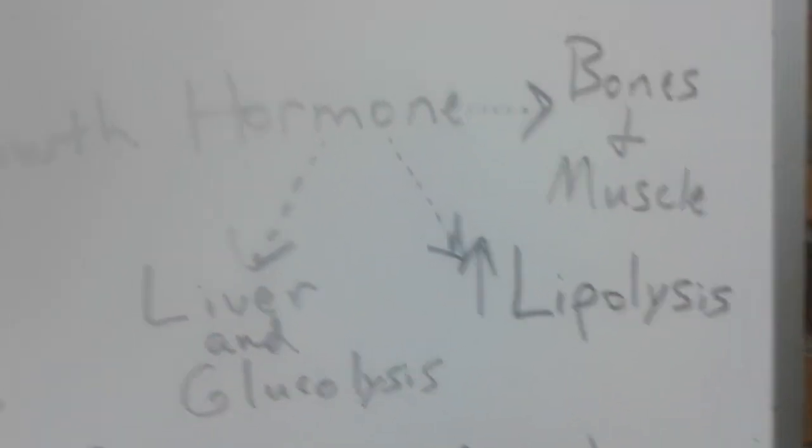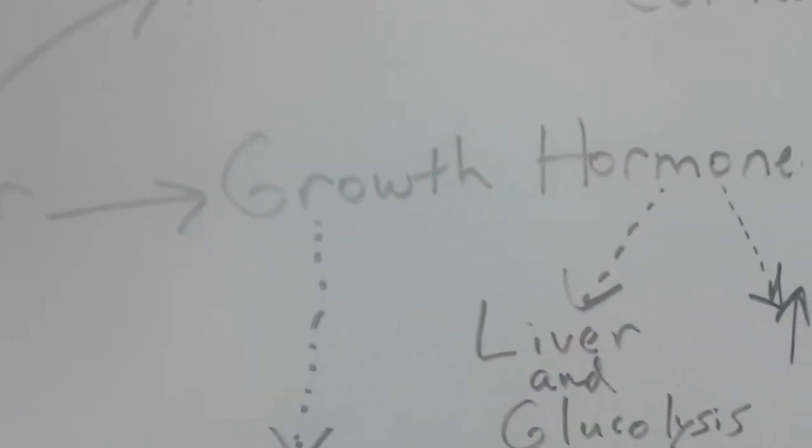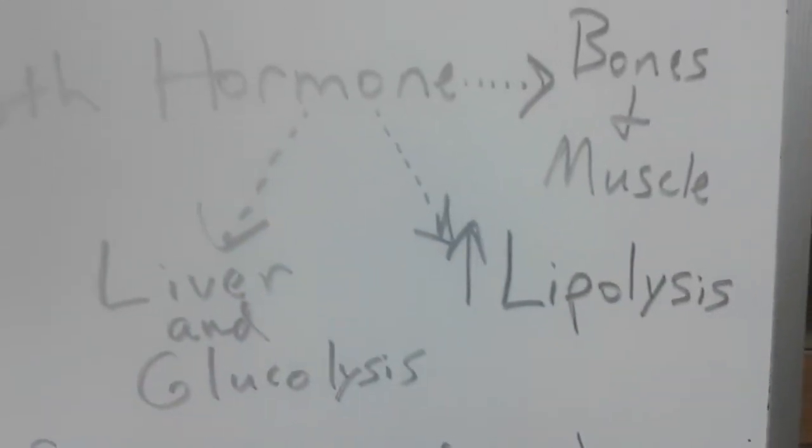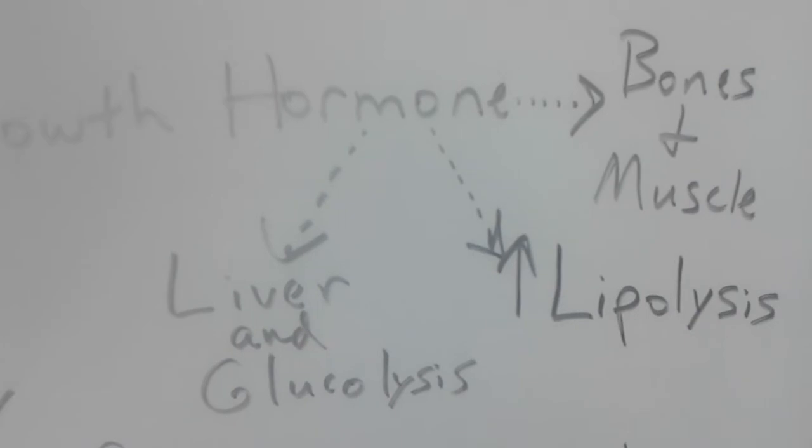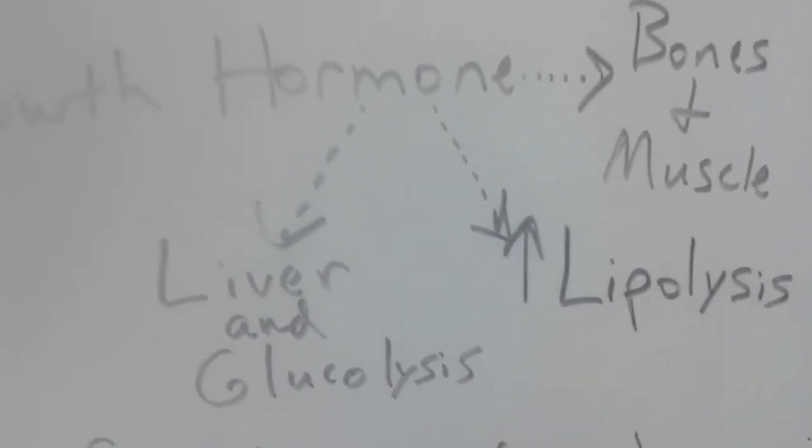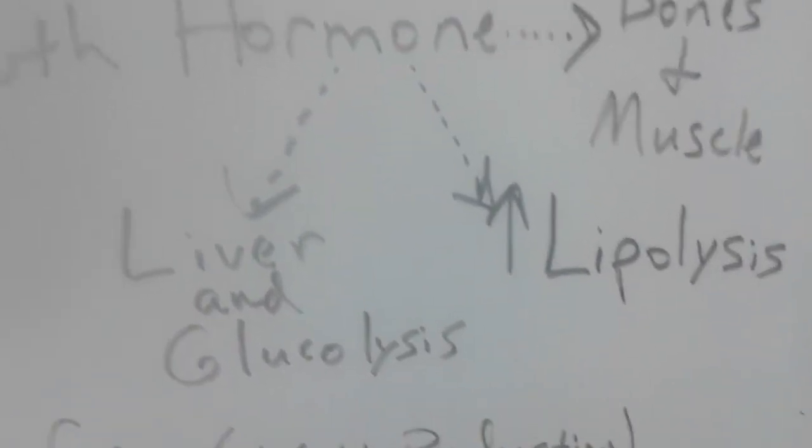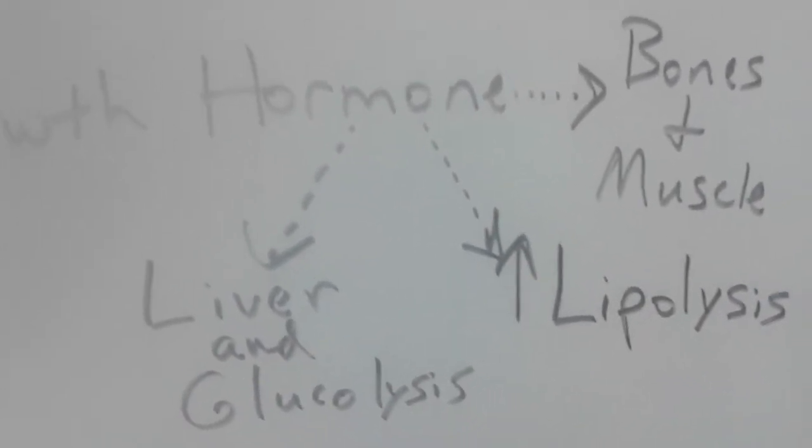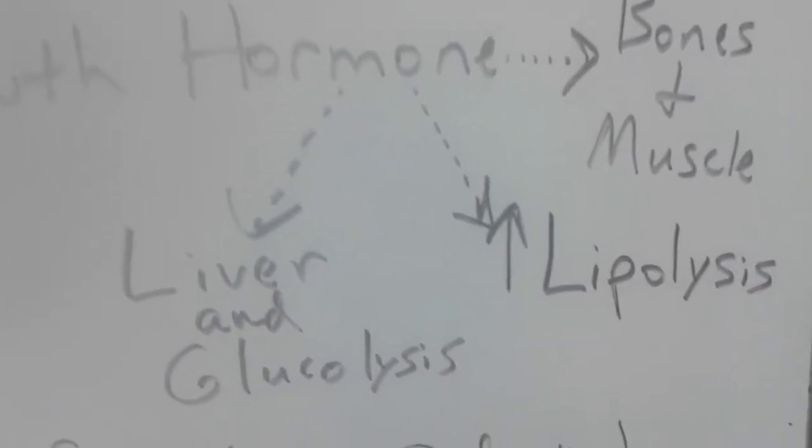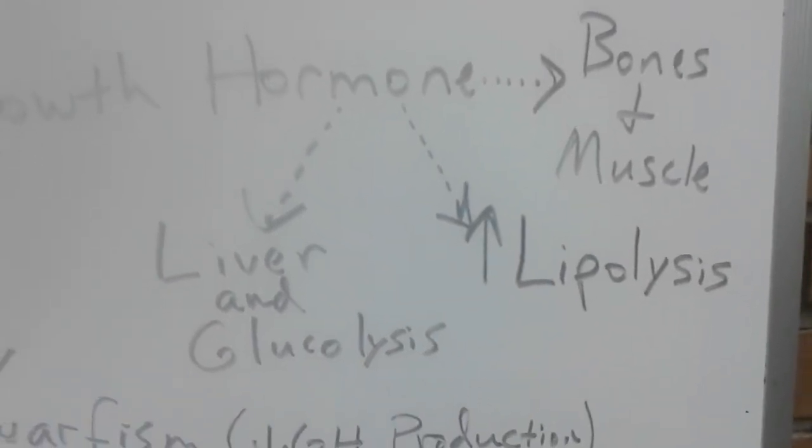And it can also lead to the stimulation of your liver and glucolysis, which is why when you release lots of growth hormone when you're a kid why you can eat everything and all that stuff you eat doesn't seem to affect you one bit. But then when you're grown all of a sudden the stuff that you used to be able to eat just seems to go straight to the spots on your body where you didn't want it to go.